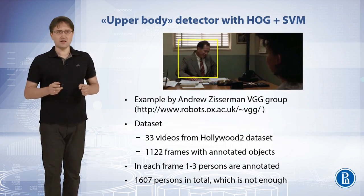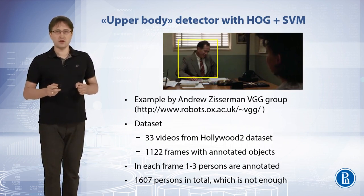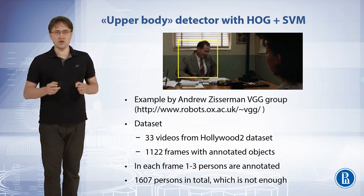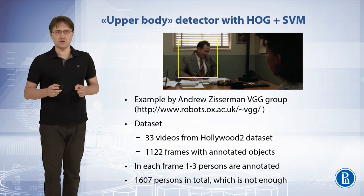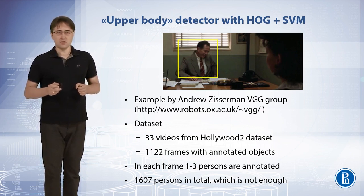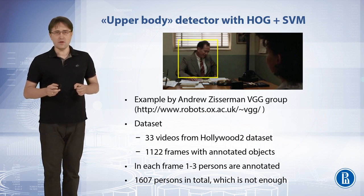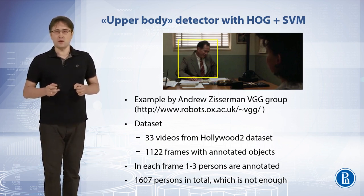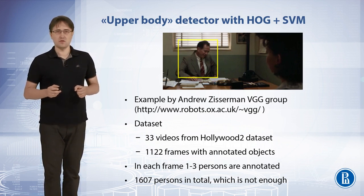I will demonstrate the training procedure using examples from Andrew Cicerman's work. It is the training of a histogram of orientation detector plus SVM for person upper torso. The dataset is created from 33 videos from Hollywood films, with a total of 1122 annotated frames containing more than 1600 persons.